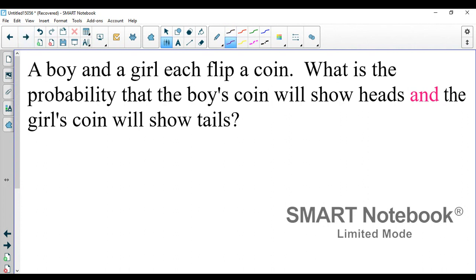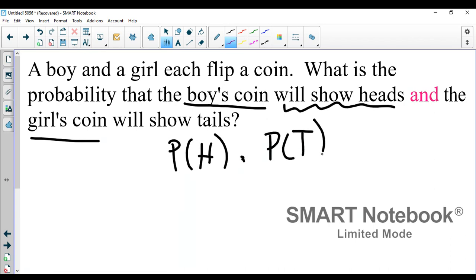Well these are kind of like detective problems. We've got to figure out how many events are happening. The first thing I know is more than one event is happening because there's a boy flipping a coin and a girl flipping a coin. The first event we're looking for is the boy's coin will show heads, so the probability of heads. And the girl's coin will show tails, the probability of tails.